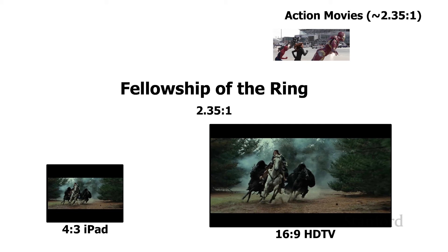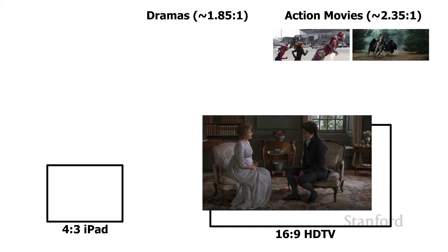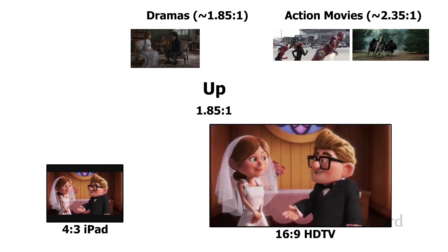In contrast, dramas are quite close to the HDTV standard. Sense and Sensibility from 1996 is 1.85 to 1, which matches almost perfectly with a widescreen television — so watching it on a widescreen TV, it fits just about perfectly, with only slight letter boxing on an iPad. Similarly, Up from Pixar 2009 has the same aspect ratio as Sense and Sensibility. These dramas look really great on an HD television with no letter boxing at all, though we will get a bit of letter boxing on an iPad.